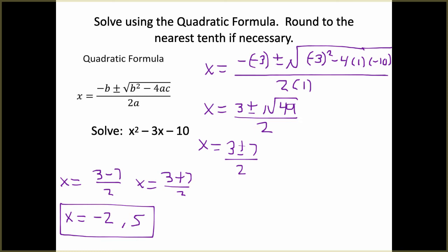This example uses a simple equation to demonstrate how the quadratic formula is used — it's actually one we could have factored, and factoring would have been way easier than going through this five-step process. But today we're learning the quadratic formula, so we'll use it on everything. Make sure I see that first step with the formula plugged in, the radicand simplified, and your two equations with final answers. If you get a radical that's not a perfect square, do not round until you get to the final answer.